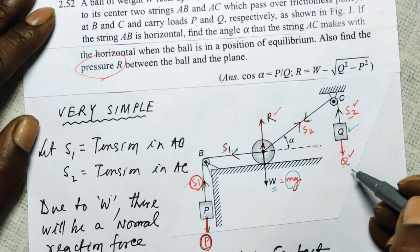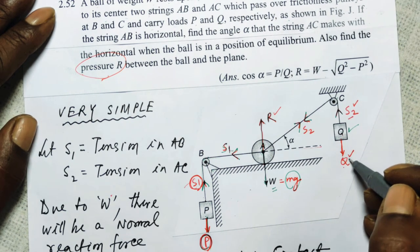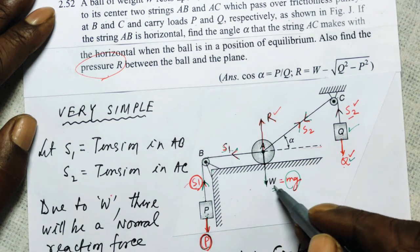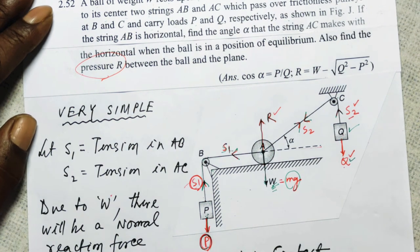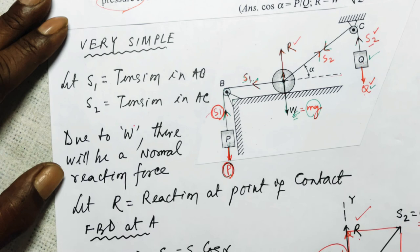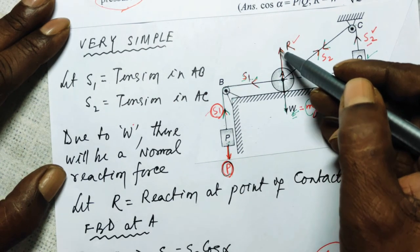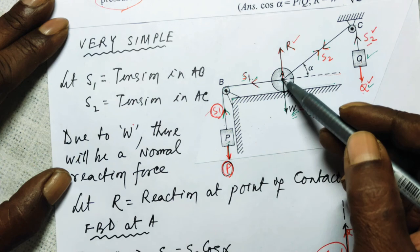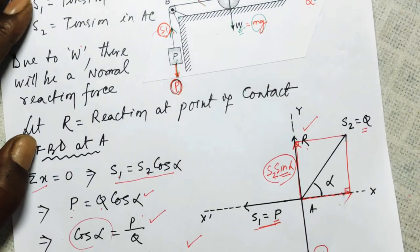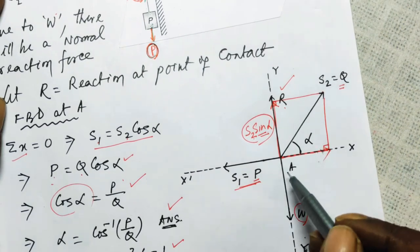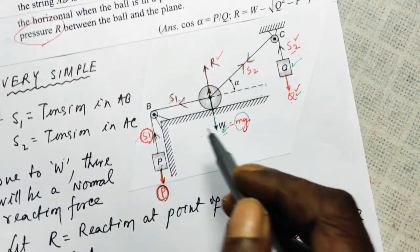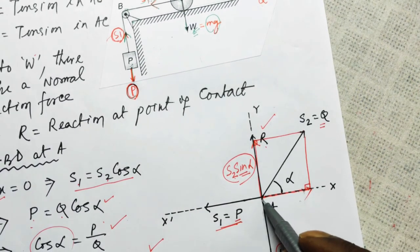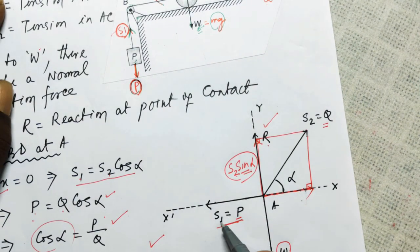Instead of mg we write just Q; similarly instead of mg for the other hanging weight we write P, and for the ball we write W. Due to W there will be a normal reaction force at the point of contact, pointing upward, normal to the surface. Now let me draw the free body diagram at point A. The x-axis and y-axis are set up with A as the origin.